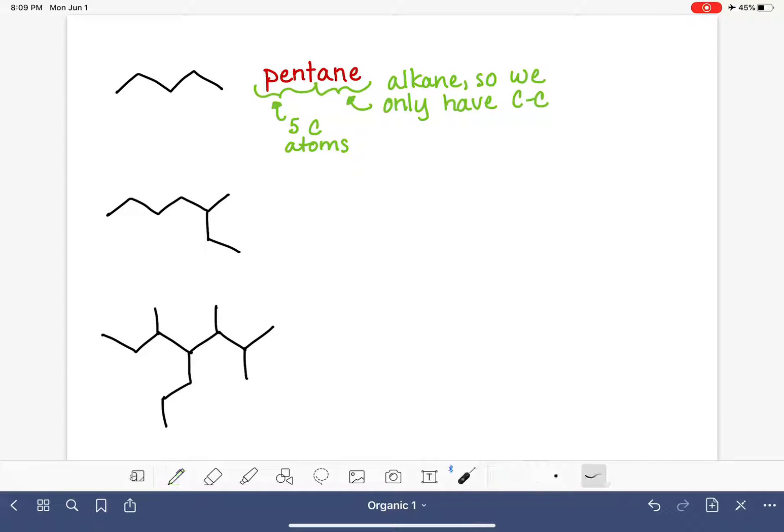In the last video, we talked about how to name a simple alkane like pentane that just has one continuous chain of carbon atoms.